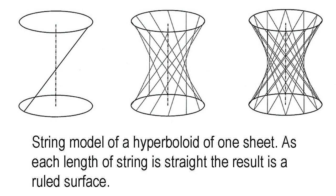This fact enables a close approximation to a hyperboloid to be made in the form of a string model. Two circular disks of the same size are held parallel, one exactly above the other, by a framework.